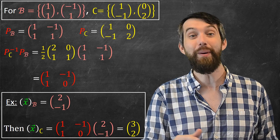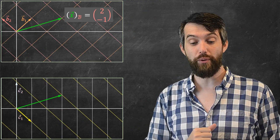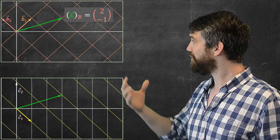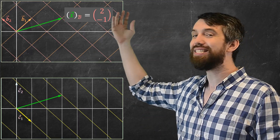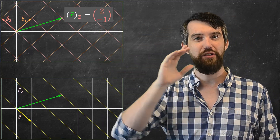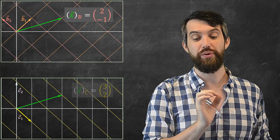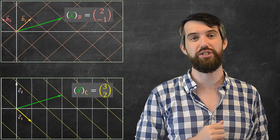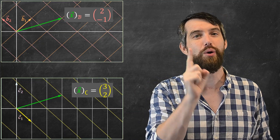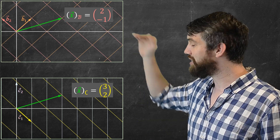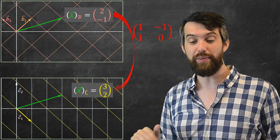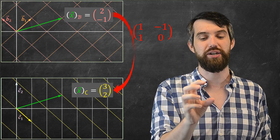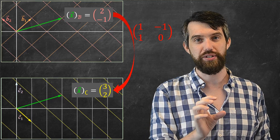Geometrically, we saw the picture with the two different bases. I have b1 and b2, and x written in the b basis. To find what x is in the c basis — which we visually expected to be (3, 2) — I multiply by the change-of-basis matrix: 1, 1, -1, 0. That takes us from one representation to the other.